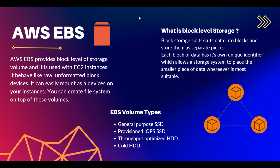In this section we'll cover AWS EBS. EBS stands for Elastic Block Storage. AWS EBS provides block-level storage volumes and it is used with EC2 instances. It behaves like raw unformatted block devices and can be mounted as a device on your instances. You can create a file system on top of these volumes — for example, when you create an EC2 instance, the operating system is stored on an EBS volume, and on top of that we create file systems like root, opt, home, etc.